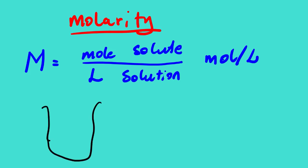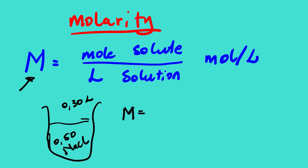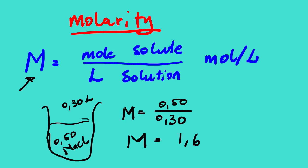Let's look at the first molarity example. We have a solution with a volume of 0.30 liters containing 0.50 mol of sodium chloride. What is the molarity? We write the equation, substitute: 0.50 mol divided by 0.30 L, and get 1.667 mol/L.